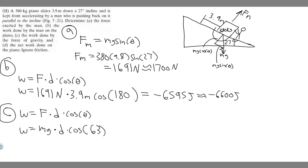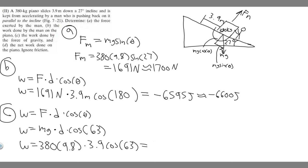Plugging in: W_gravity = 380 × 9.8 × 3.9 × cos(63°). Calculating this gives approximately +6,595 joules, which is positive 6,600 joules. Notice this has the same magnitude as the work done by the man but is positive instead of negative.